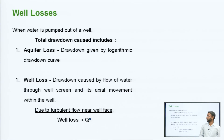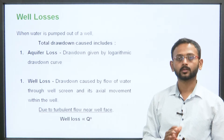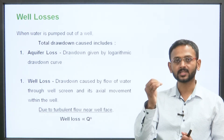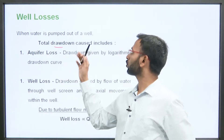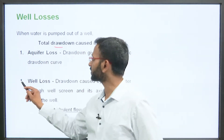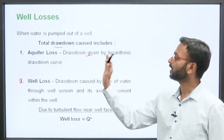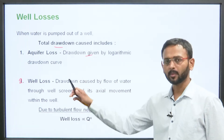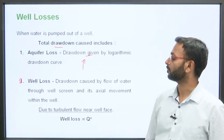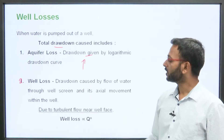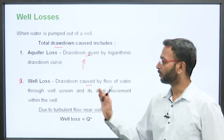Now let us talk about the well losses. When the water is pumped out of a well, some drawdown is caused. The total drawdown caused includes two things: first is the aquifer losses, and second is the well loss. Aquifer loss is the drawdown given by the logarithmic drawdown curve — joh ki aap hamesha cone of depression mein dekh te aaye hain. The well loss is the drawdown caused by the flow of water through the well screen and its axial movement within the well.